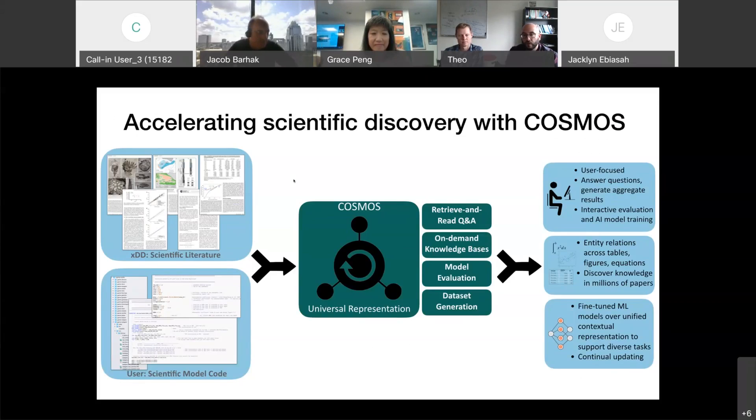At its core, Cosmos has a universal representation that represents this multimodal context information from scientific literature into a semi-structured format that can be used to power applications, such as constructing knowledge bases on demand, generating datasets, extracting observational data from the literature, and so on.